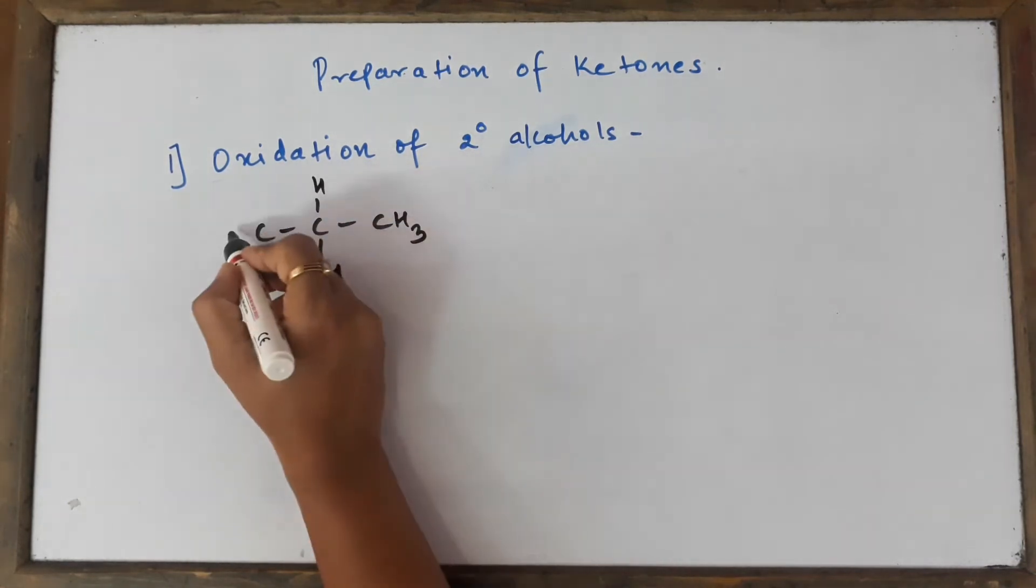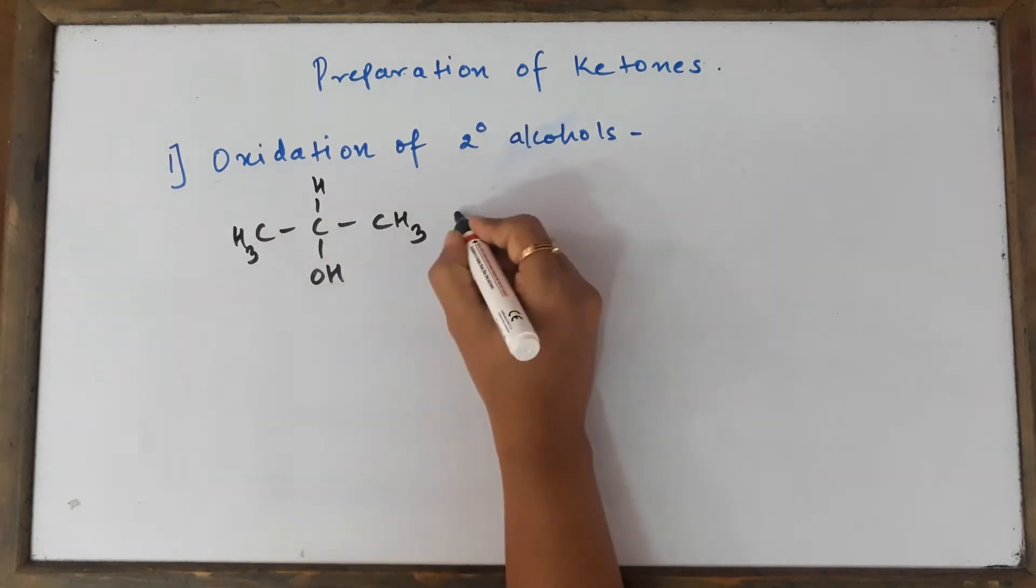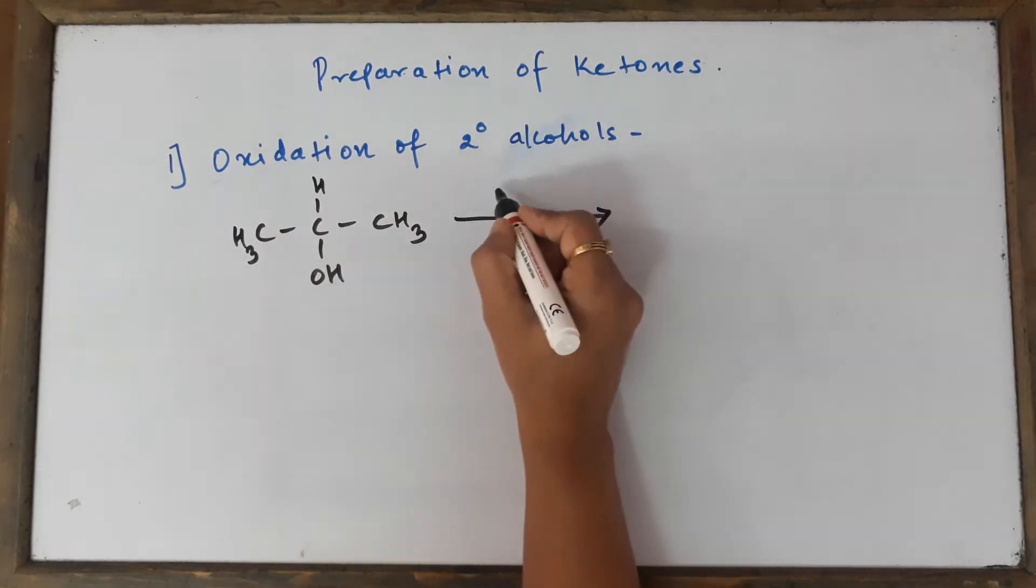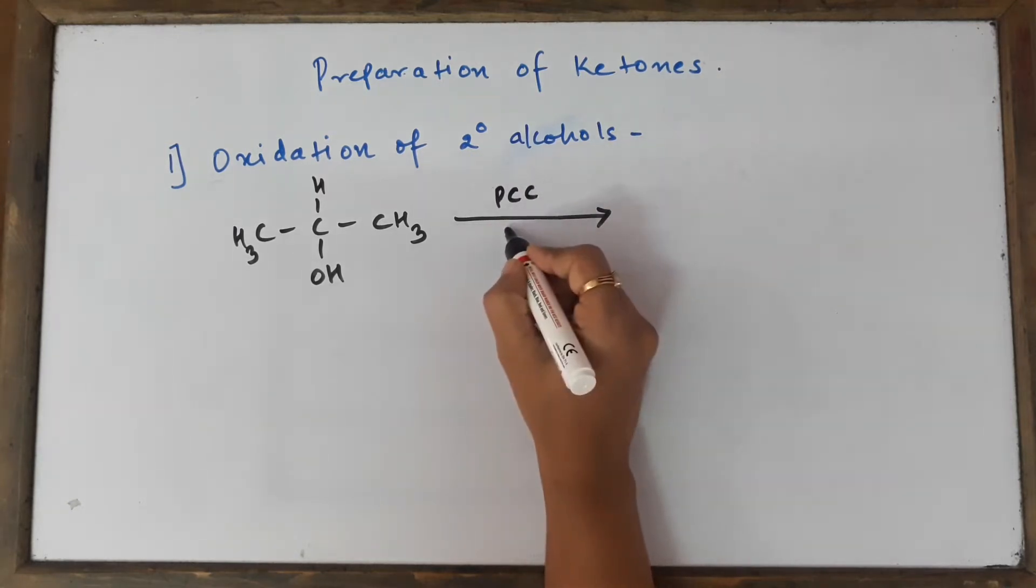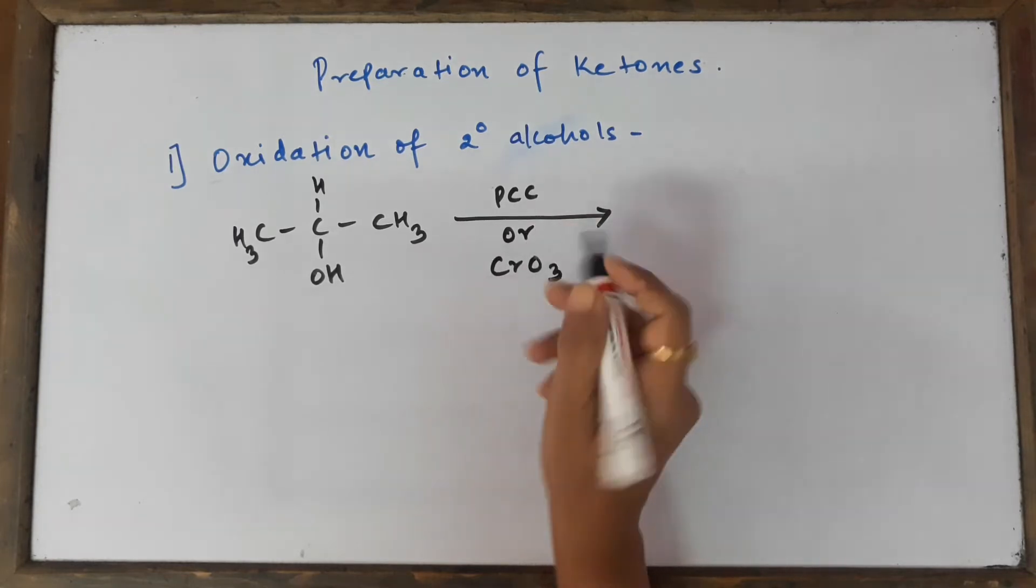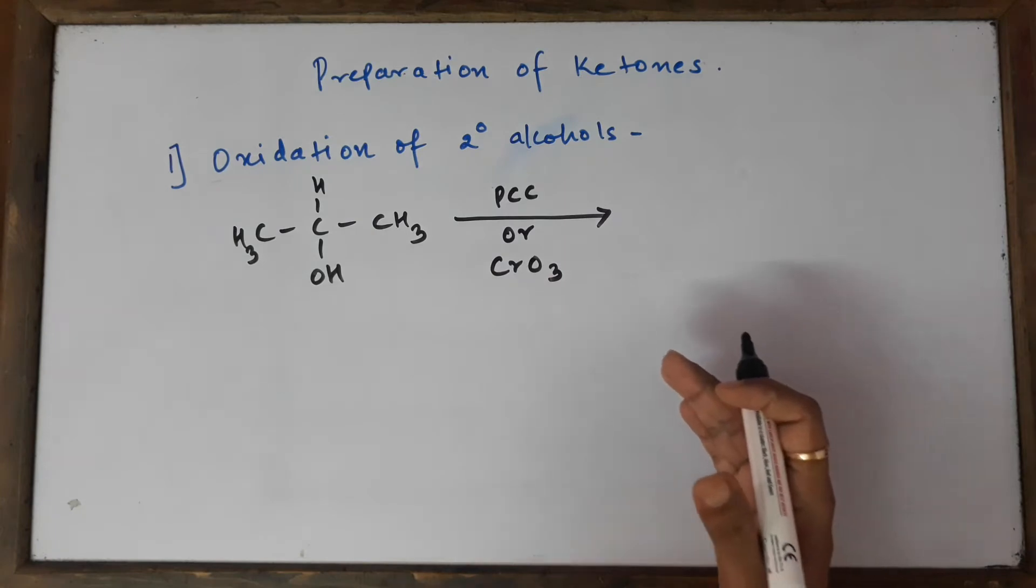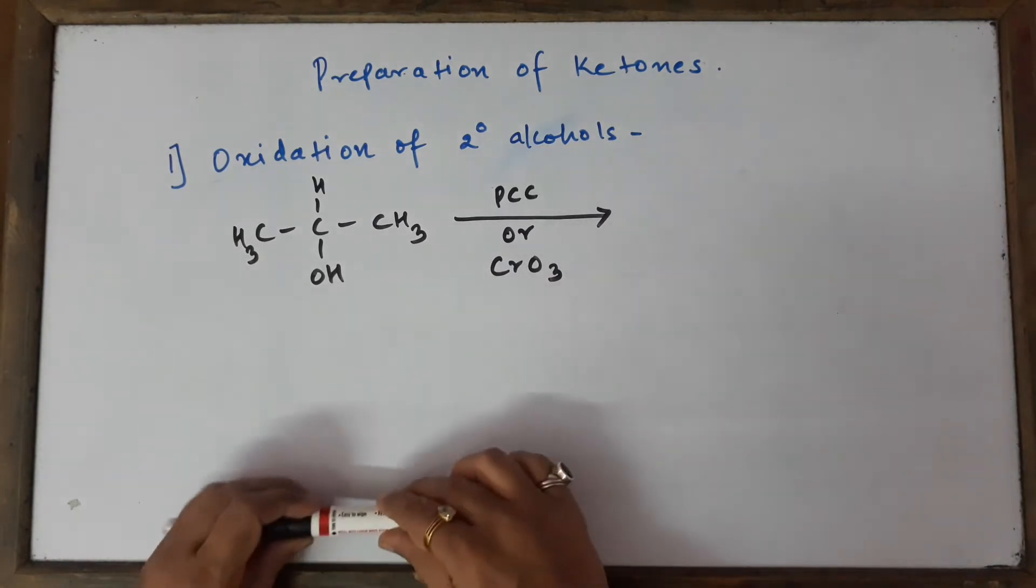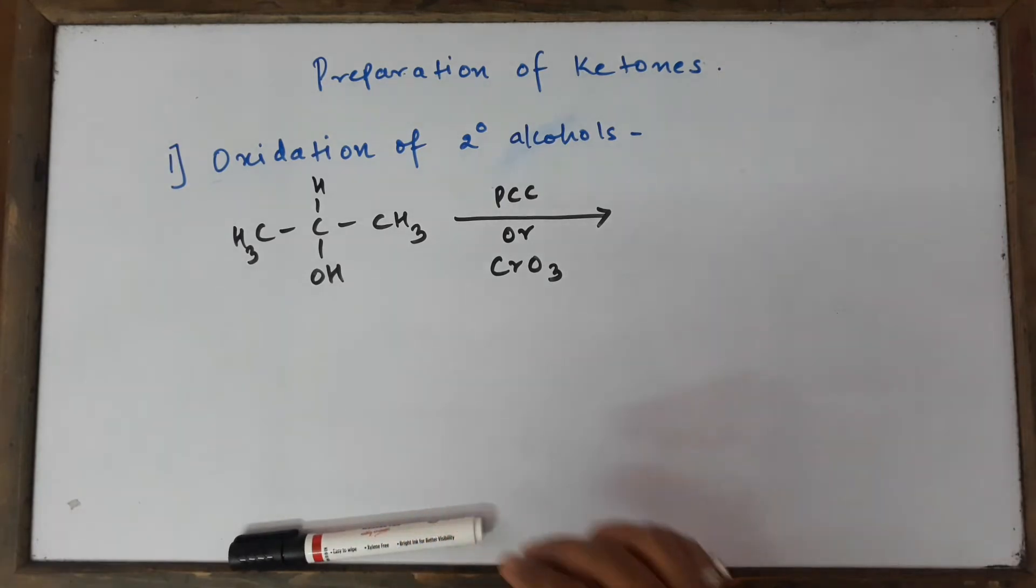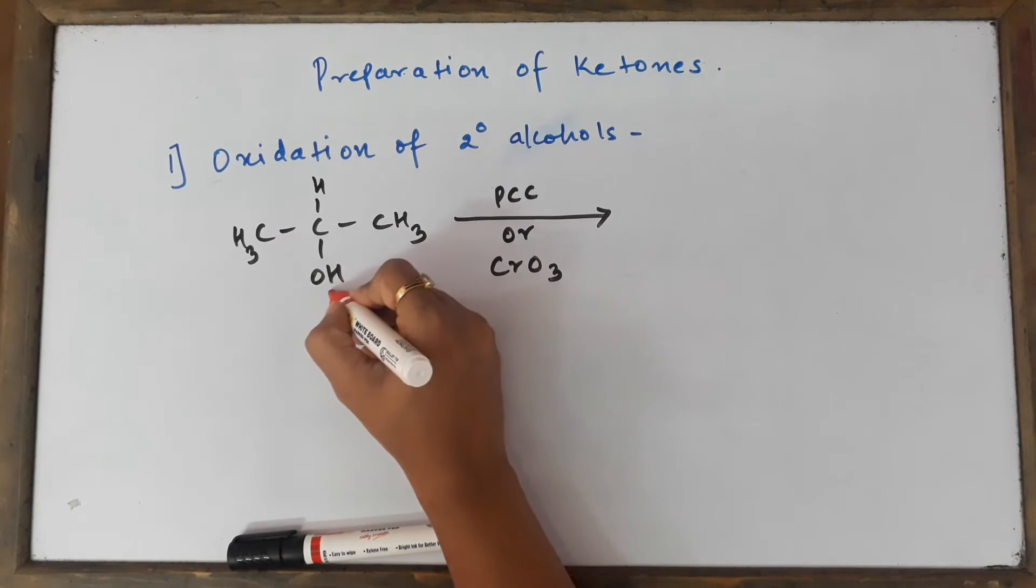We're using a very mild oxidizing agent. We are going to use pyridinium chlorochromate (PCC) or chromic anhydride (CrO3). The job of these two reagents is that they are very mild; they will not cause complete oxidation but only partial oxidation. If we use very strong oxidizing agents we will get complete oxidation.